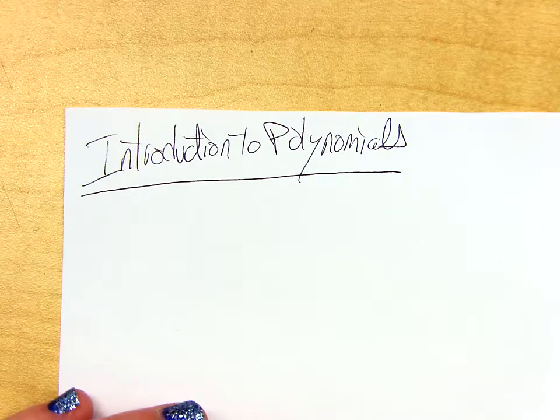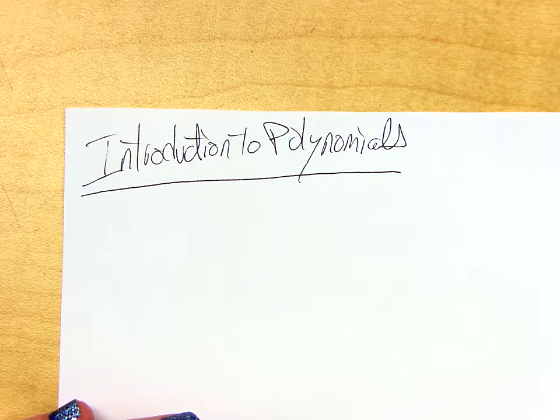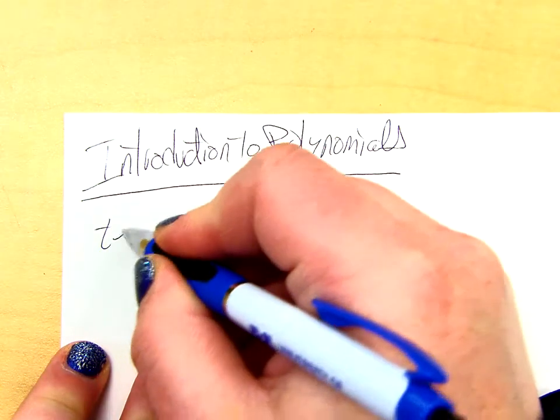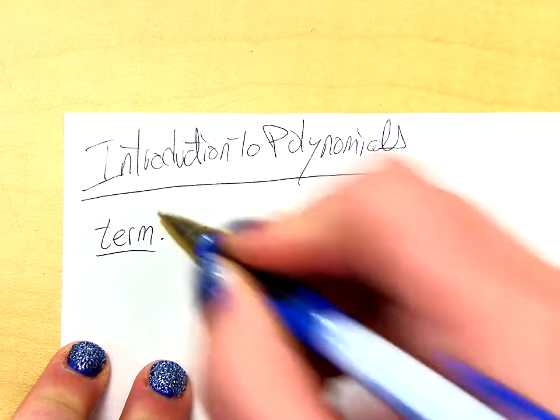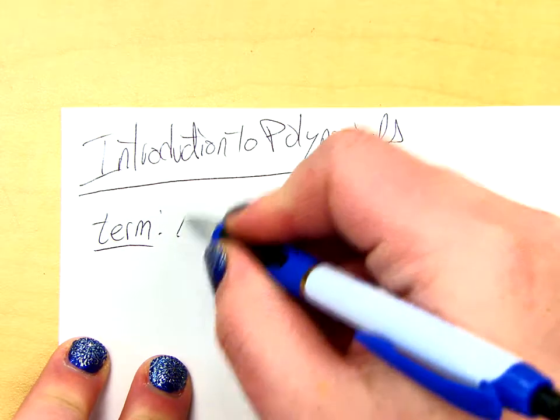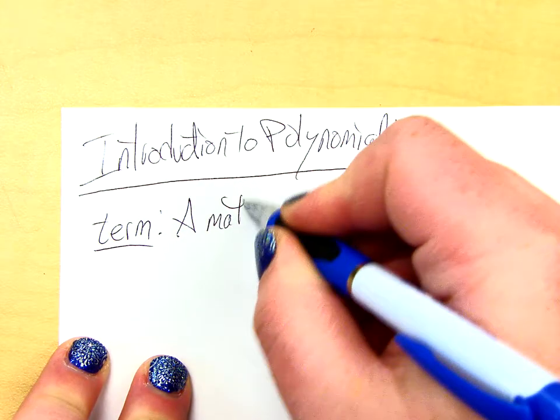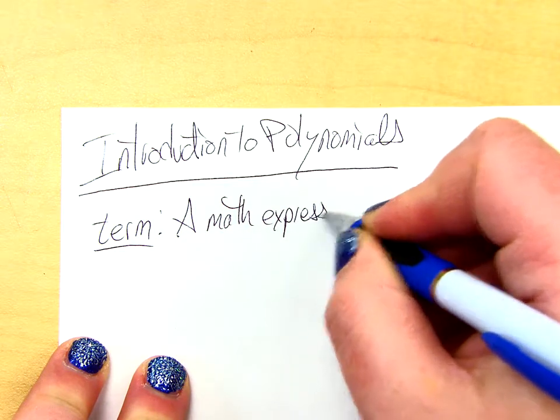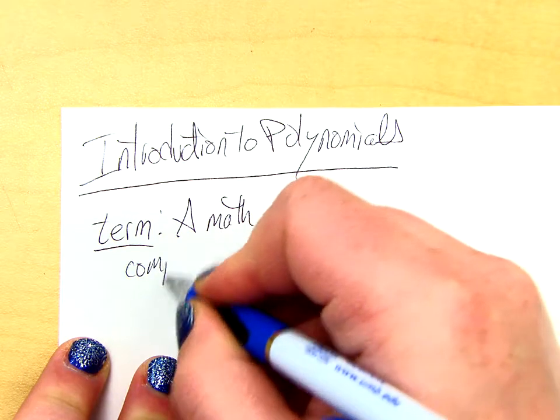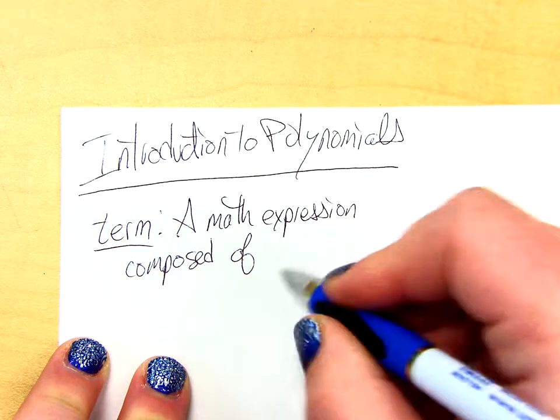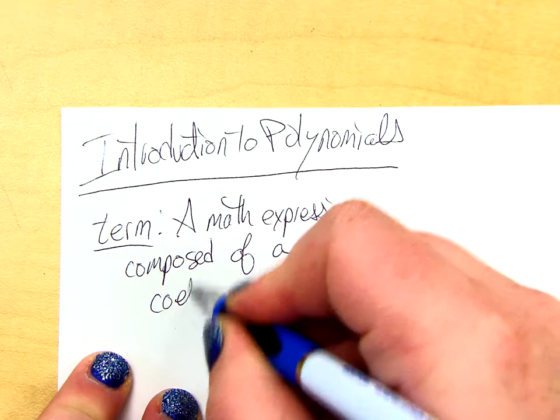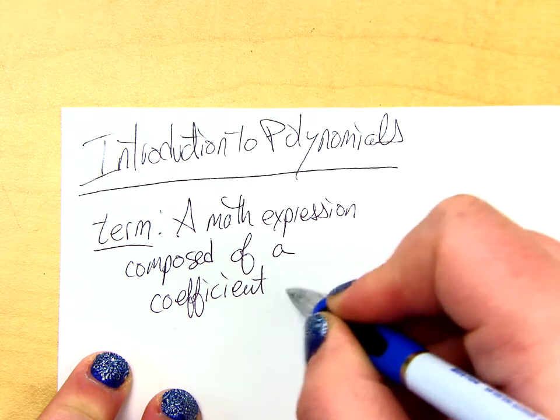So, today we are talking about polynomials. Before we can define a polynomial, though, we need to define another vocab word, a term. Okay? So, in math, when we refer to a term, we mean a math expression composed of a coefficient.